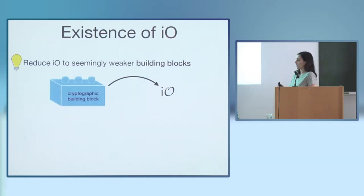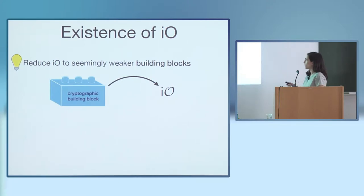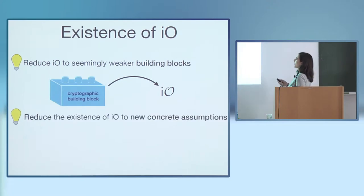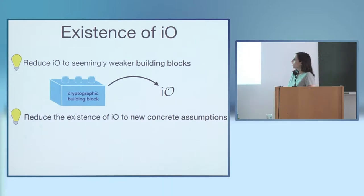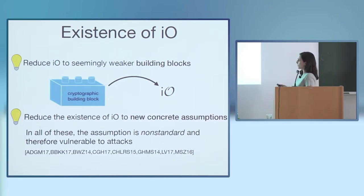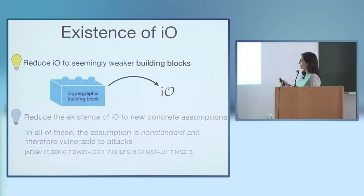There's a long line of work showing that IO has many applications, from classical primitives to much more recent primitives. The main open question in this area is: does it exist, and can we construct it? Towards that, there have been two approaches towards constructing IO. The first tries to reduce IO to seemingly weaker cryptographic building blocks. The other approach tries to use new concrete assumptions and base the security of IO on them. Unfortunately, since they're new, they haven't been tested for long, so some of these are vulnerable to attacks. In this talk, I'll be focusing on the first approach of building IO from generic assumptions.